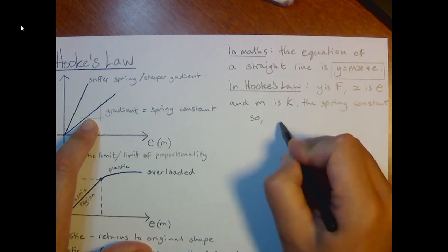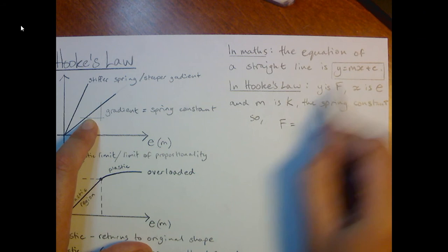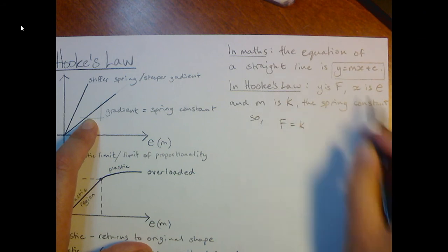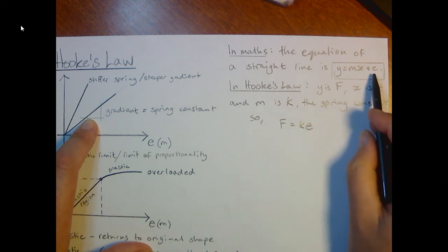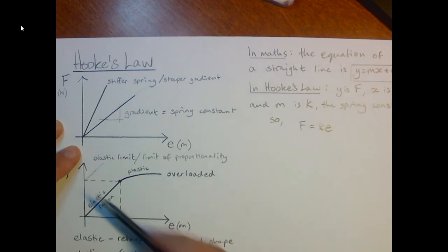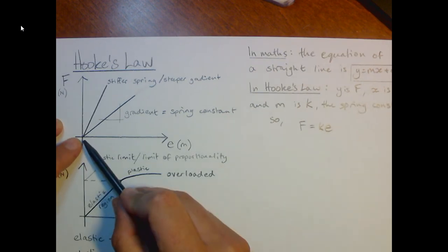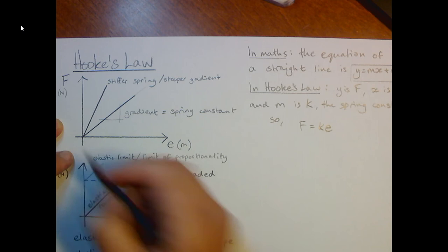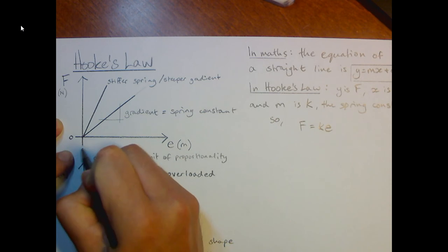But we just replace these letters with our physics letters. So y is F. M is k. X is e. And c, I haven't mentioned. C in maths is where the line crosses the y-axis, the y-intercept.